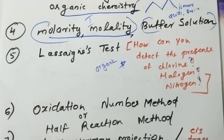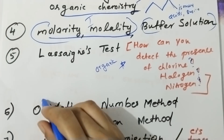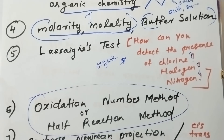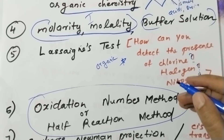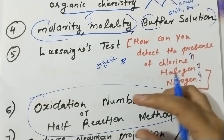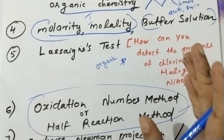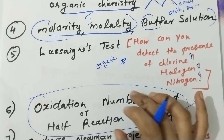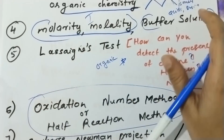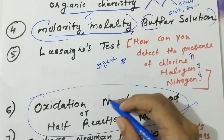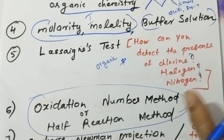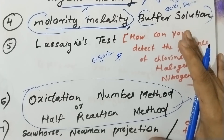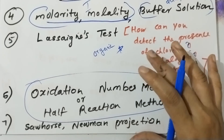Next is the redox reaction. The first method is the oxidation number method. The half-reaction method is also available. If you find the topical rule in our topic, you will get the answers. I will share it as a topic — if you want to join the group, you can join the class, and I'll share the notes.